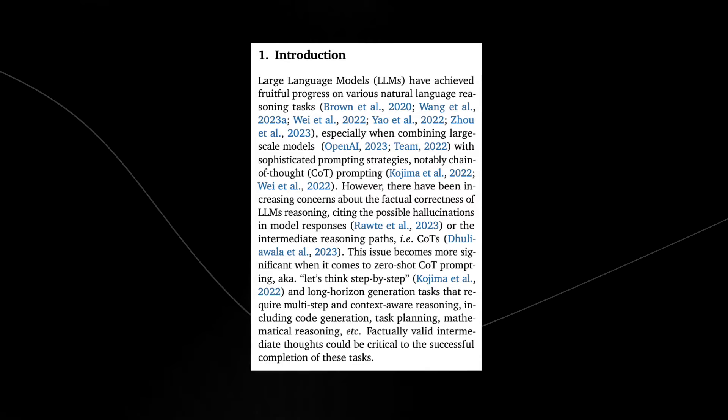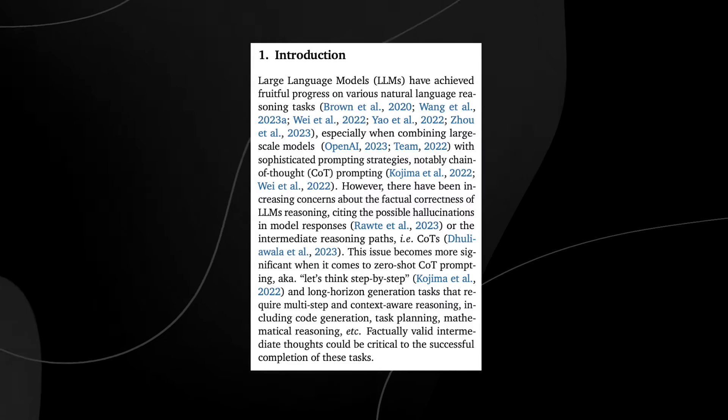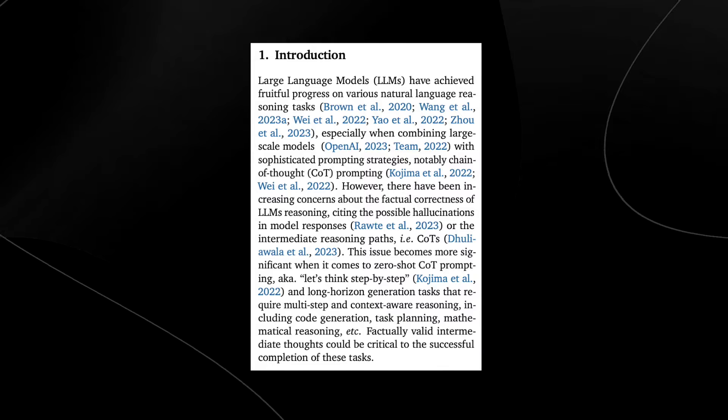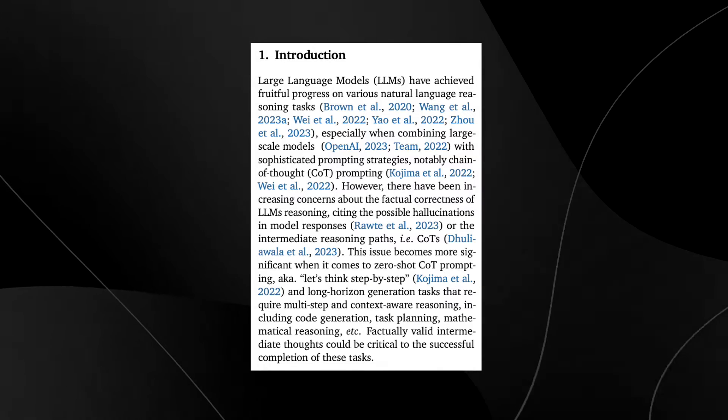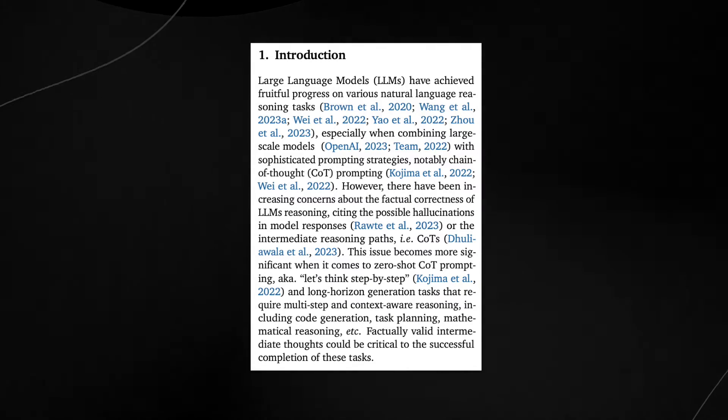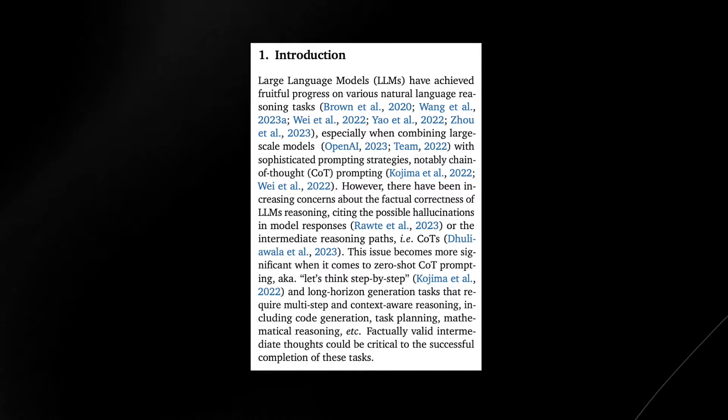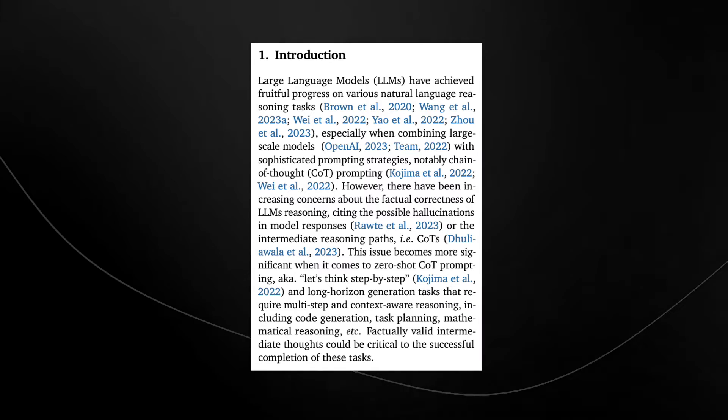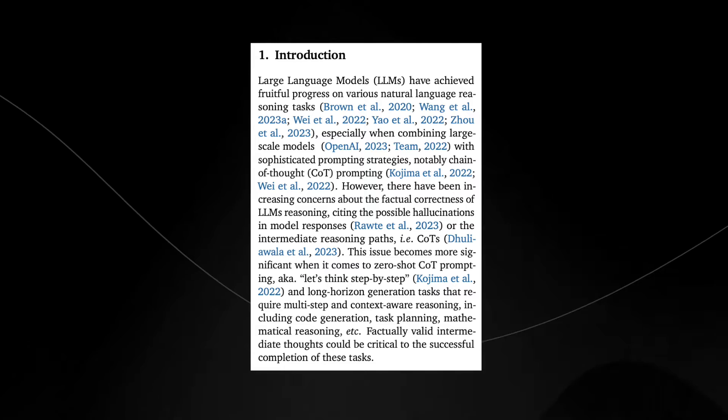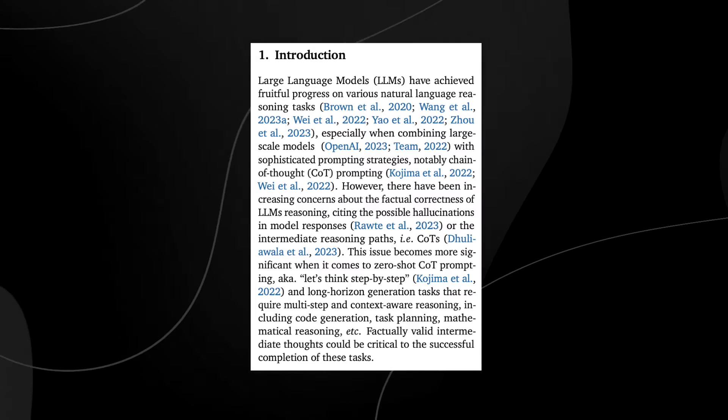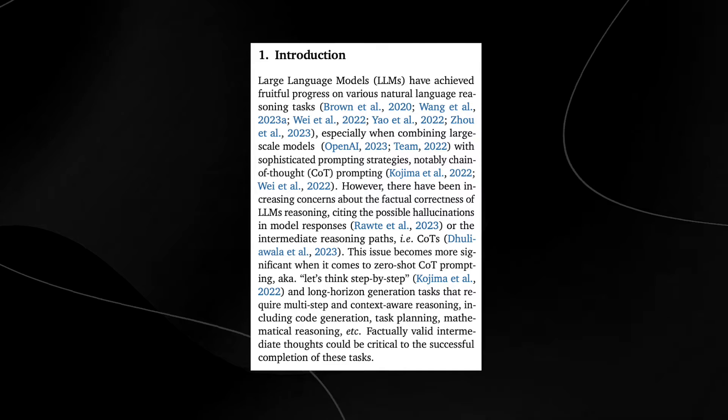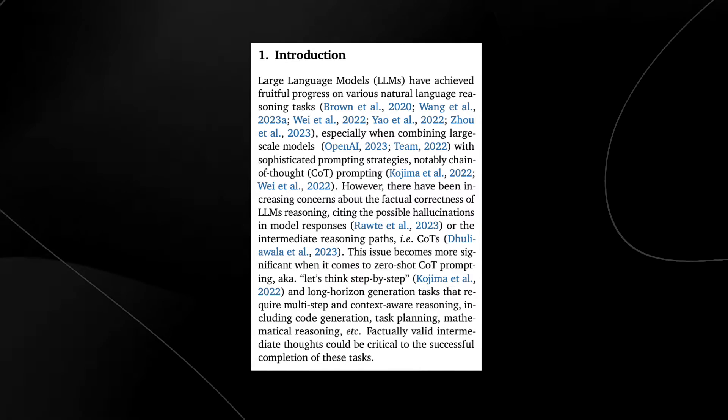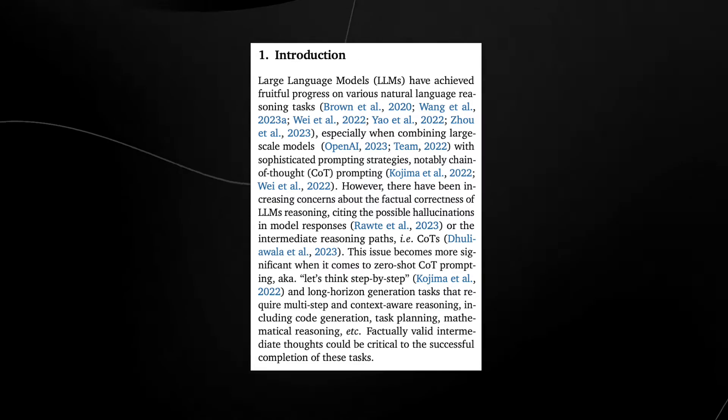Large language models, or LLMs, have been making headlines for their ability to understand and generate human-like text. From writing poems to coding, their versatility is astonishing. But there's a catch. They're not perfect. Especially when it comes to reasoning over complex tasks, LLMs often struggle, producing inaccurate or even hallucinated information.